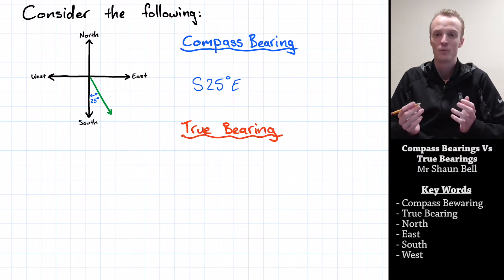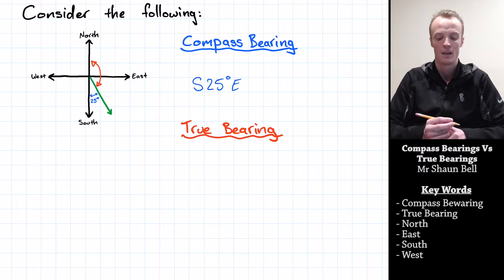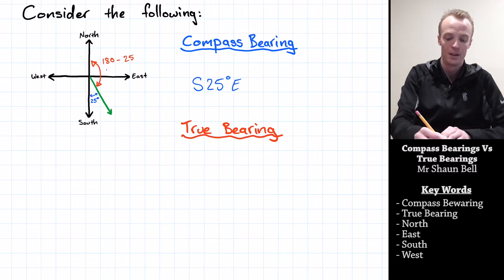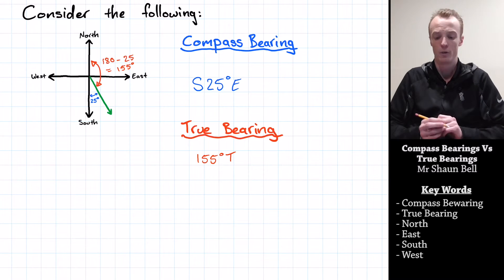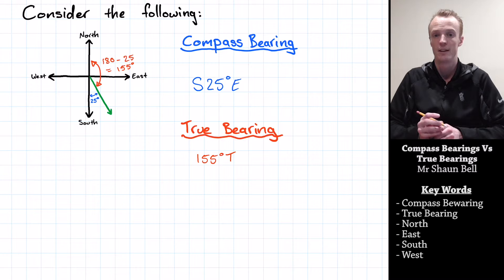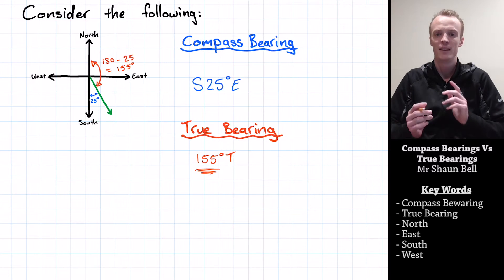Now for the true bearing, we need to work out how many degrees it is in a clockwise direction from North. We know between North and South it's 180 degrees, so to find this it's 180 minus 25 degrees, which equals 155 degrees. So our true bearing is 155 degrees true. There is one more rule for recording true bearings: if the true bearing is less than 100 degrees, we still record it with three digits — the first digit simply becomes a zero.